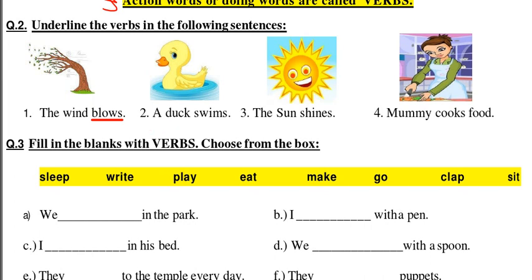'A duck swims' — swimming is a verb telling us what action the duck is doing. Then 'The sun shines' — the sun is shining, so 'shines' is the verb. 'Mummy cooks food' — what does mummy do? She cooks the food. So 'cooks' will be the verb here.